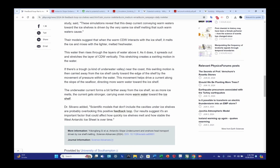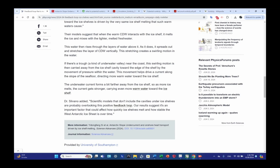Vorticity is a term that describes a tendency for fluids to rotate. If there's a trough, basically an underwater valley near the coast, this swirling motion is then carried away from the ice shelf cavity toward the edge of the shelf by the movement of pressure within the water.